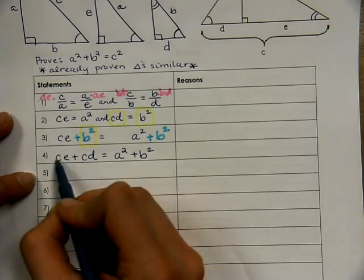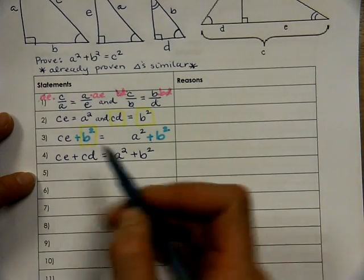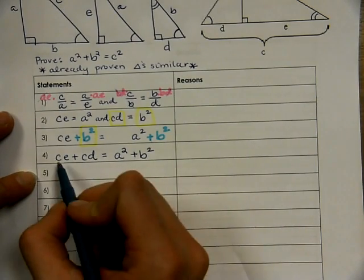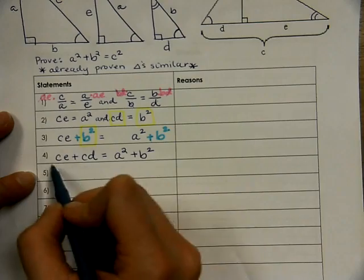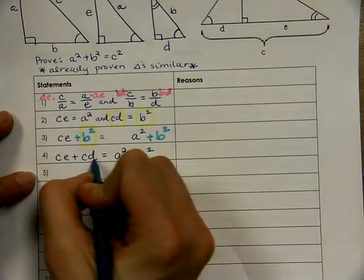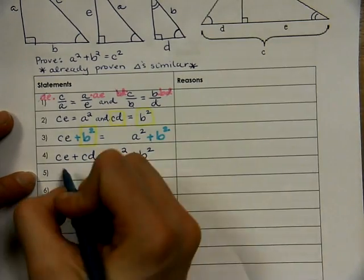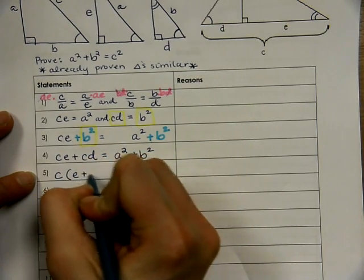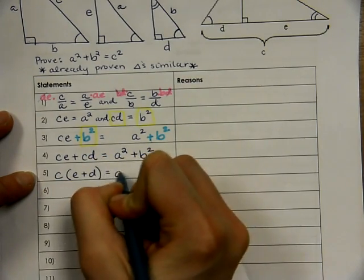Now, we are getting closer. We see more C's here. But we don't have this completely written as C squared yet. So, what we are going to do is we can factor out a common factor. That common factor is C. And we are left with E plus D in parentheses when you factor out C.